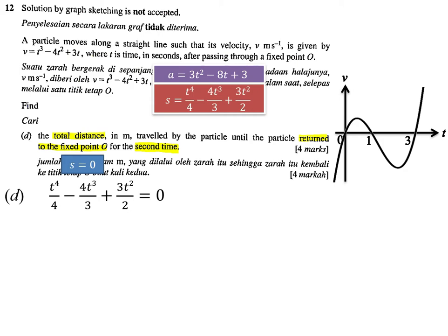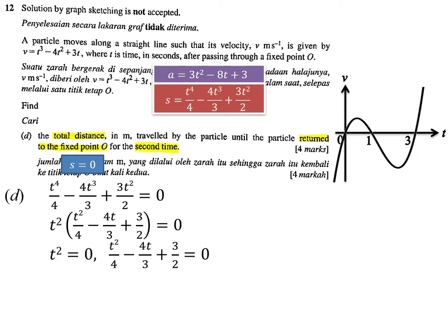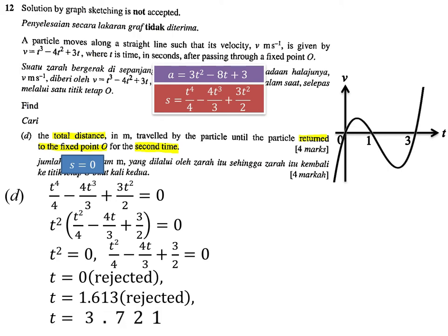Factorize t² first from the displacement equation, leaving t²(t²/4 - 4t/3 + 3/2) = 0. Solving gives the first value t = 0, the second value t ≈ 1.613, and the third value t ≈ 3.721. So the particle passes through the origin for the first time at t = 1.613 seconds and returns through the origin for the second time at t = 3.721 seconds.